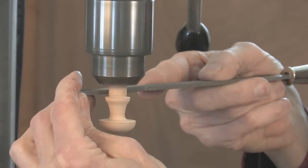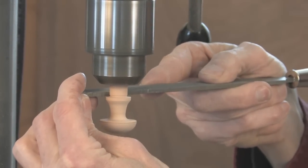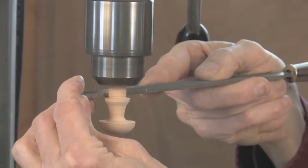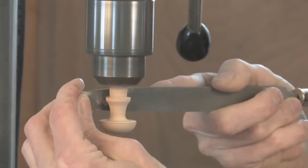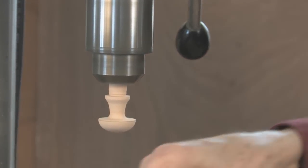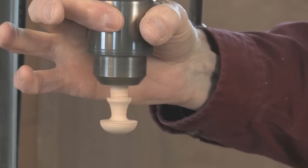And then I will use a small flat file to actually do the shoulder itself so that when you drive the knob home, you have a nice flush fit all the way around.